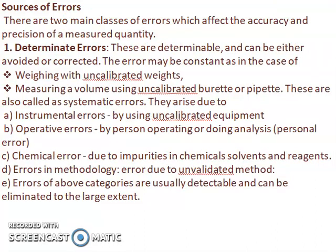Sources of errors: there are two main classes of errors which affect the accuracy and precision of a measured quantity. Determinate errors are determinable and can be either avoided or corrected. The errors may be constant, as in the case of weighing with uncalibrated weights or measuring a volume using an uncalibrated burette or pipette. These are also called systematic errors, and they arise due to instrumental errors from using uncalibrated equipment.